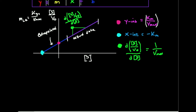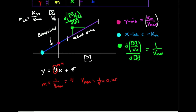Suppose I plot this line and ultimately get this equation. Let's say Y is equal to 4X plus 5 — I'm just making up numbers here. That's the line generated from using the Haynes-Wolf plot on Excel. So what does this tell us? The slope is one over Vmax. The slope equals 4, so one over Vmax equals 4, meaning Vmax equals one-fourth, or 0.25 with whatever units the rate was in.